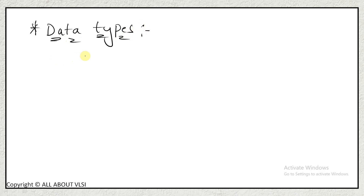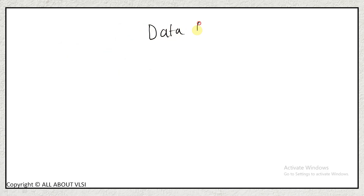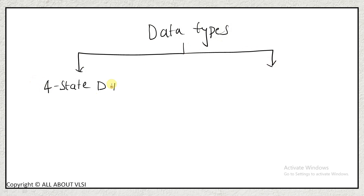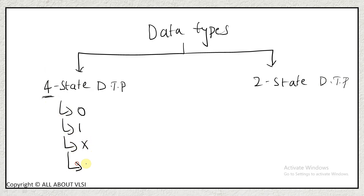In these data types, first we will see about the logic data type. Before that, in SystemVerilog the data types are classified into two types: four-state data type and two-state data type. In four-state data types, as the name indicates, there are four states: zero, one, x, and z. In two-state data types we have only two states: zero and one. Note that in Verilog we have only four-state data types.